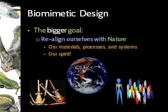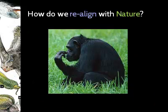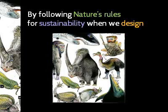It could be our materials, our processes, our systems, and of course our spirit. So that's the goal of biomimetic design. That begs the question: how do we realign with nature? What do we mean by that, and how do we do that as sustainable designers? We realign with nature by following nature's rules for sustainability when we design. It's really as simple as that.